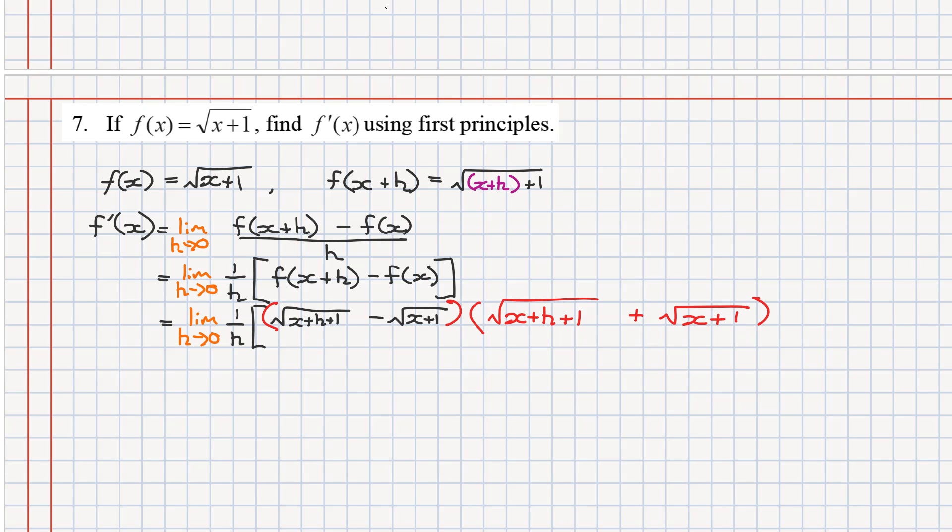You might be saying, hold up, we can't do that. This isn't a fraction. If we multiply it out, we're going to change the overall result of the equation. You're absolutely right. What we have to do is express this left-hand term as over a one, and the right-hand side has x plus h plus one plus x plus one.